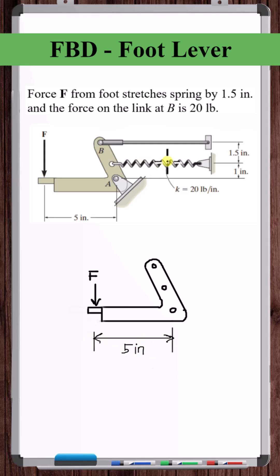It says the spring is stretched by 1.5 inches, so we have the spring constant. The force in the spring is equal to the spring constant times the distance that it's stretched, so 30 pounds. Since the spring is stretched, it's pulling on the lever in this direction.